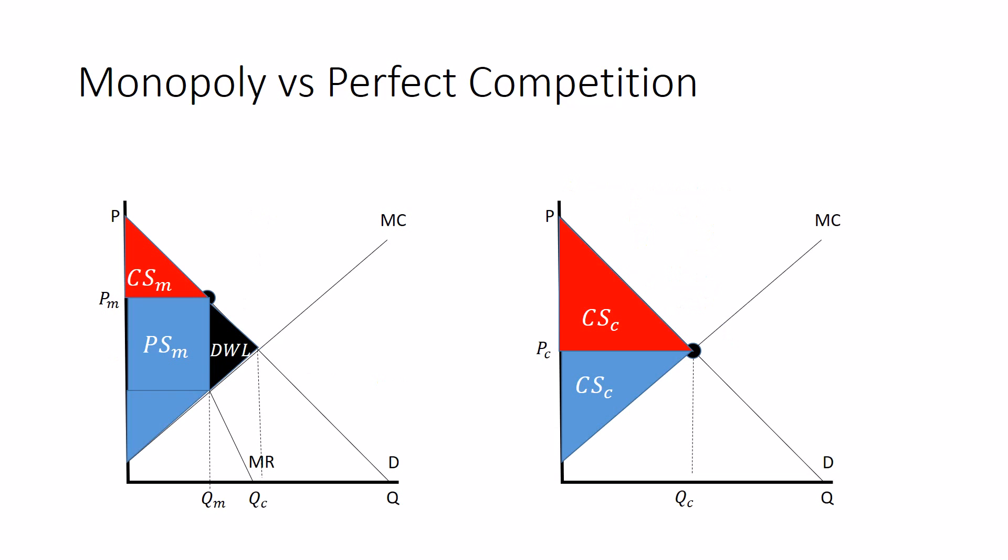A monopolist, by lowering the quantity and raising the price, creates inefficiency and deadweight loss. And that is why this is one form of a market failure. Market failure means the market leads to an inefficient outcome.